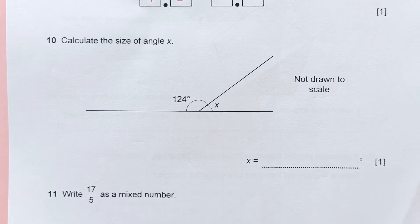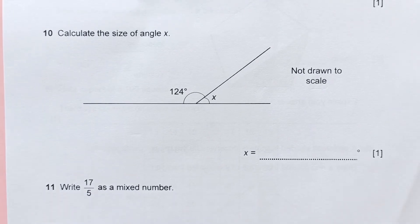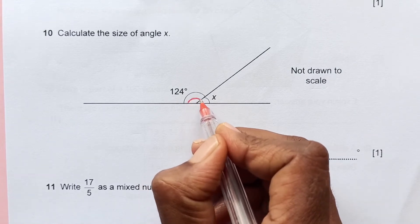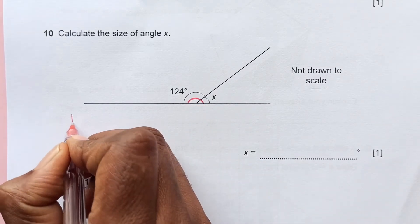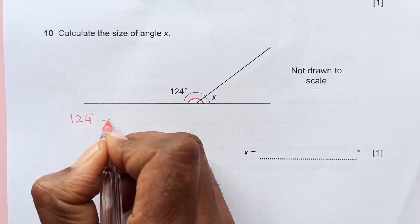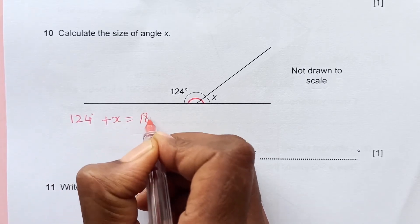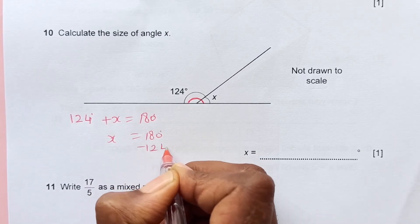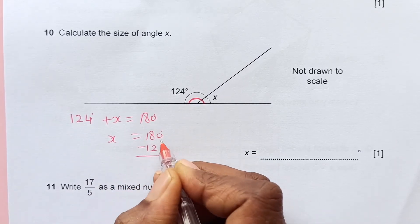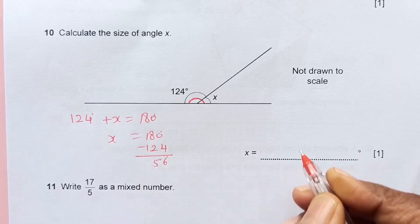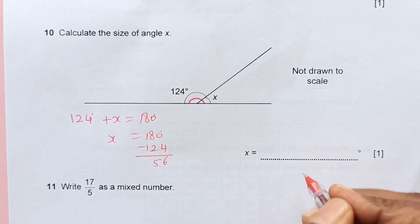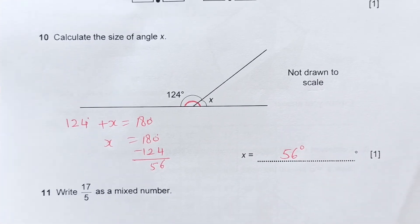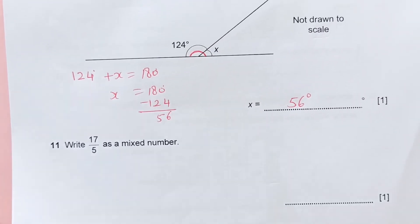Number 10. Calculate the size of angle X. These two are angles on a straight line, so the sum of them will be 180 degrees. X will be 180 minus 124. 10 minus 4 is 6, then 7, so 56. The answer is 56 degrees.